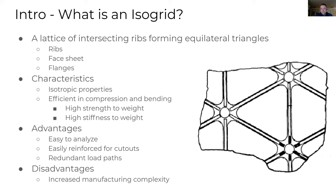Unlike ortho-grid structures where you'd have to do a more detailed analysis, you can use easy hand calculations to figure out stresses. It can also be easily reinforced for cutouts, point loads, or wire holes that need to pass through. It has a redundant load path — if there's a failure in certain situations, the ribs help redirect loads around damage. The disadvantage is increased manufacturing complexity. Typically these are manufactured by taking a plate and machining every single triangle.